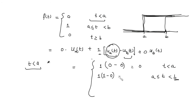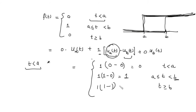That gives 1 times 1, which equals 1. After 'b', u(t-a) = 1 and u(t-b) = 1, so we get 1 - 1 = 0. This matches the original definition, confirming we can express any piecewise continuous function defined on some interval in terms of the unit step function.